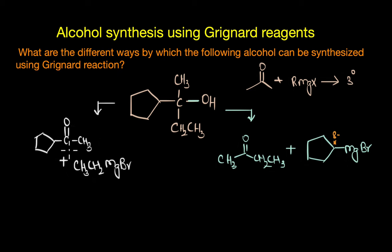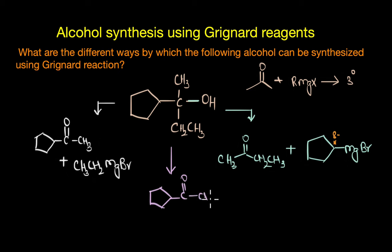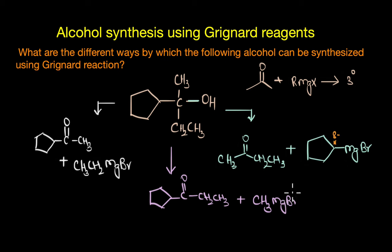There is one more possibility: when the carbonyl carbon belongs to the ethyl group and this particular group. In that case, the reactants would be C=O–CH₂CH₃, and the only group that needs to be added is the methyl group, which comes from the Grignard reagent — methyl magnesium bromide. So these are the various ways in which we can prepare this particular tertiary alcohol.